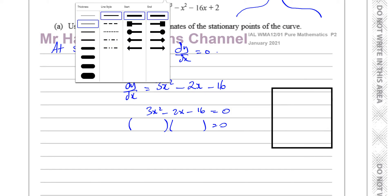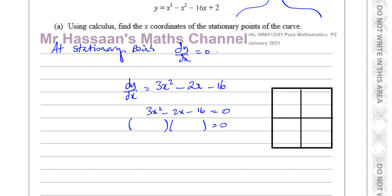I like to draw a little grid and use that to work out the factorization. I put 3x squared in the top left and minus 16 in the bottom right. The two numbers I write in the other boxes must add up to give me minus 2x, so their sum has to be minus 2x. The product of those two will always equal the product of 3x squared and minus 16, which is minus 48x squared.